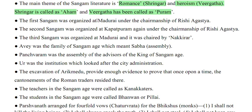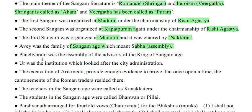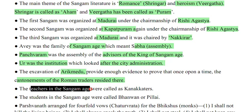The first Sangam was organized at Madurai under the chairmanship of Rishi Agastha. The second Sangam was organized at Kapatpuram, again under Rishi Agastha. The third Sangam was organized at Madurai and was chaired by Nakirar. Ayave was the family assembly (sabha) of the Sangam age. Panchvarnam was the assembly of advisors of the king. The teachers were called Kankatas and students were called Bhavan or Pillai.